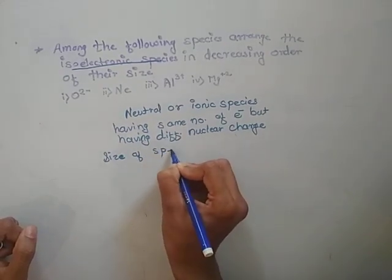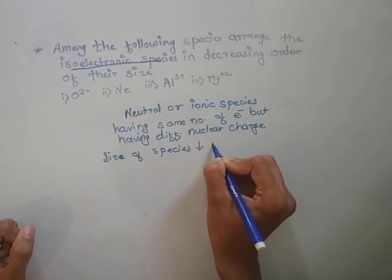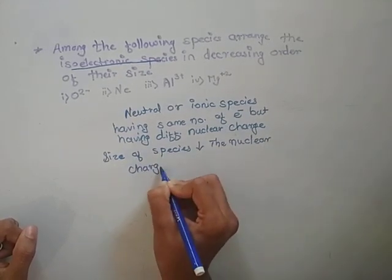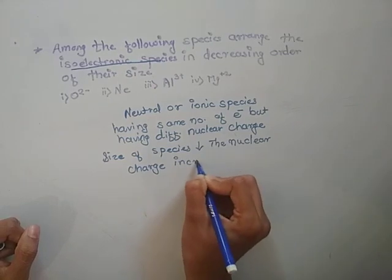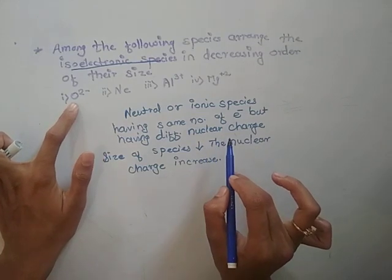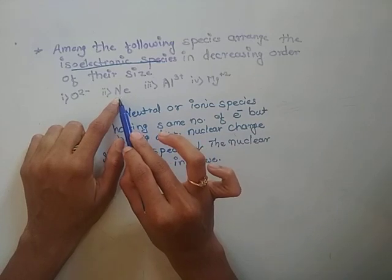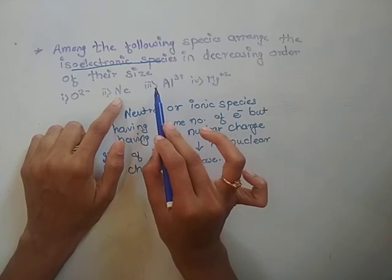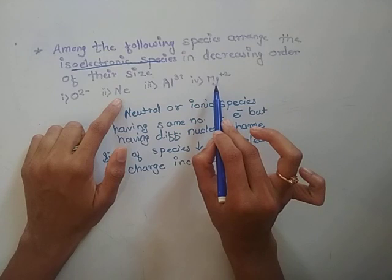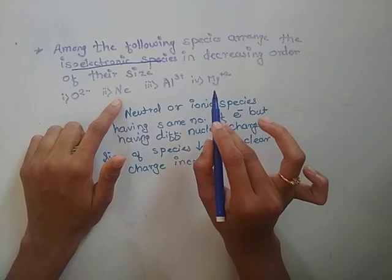For isoelectronic species, size decreases as nuclear charge increases. In this example, oxygen has atomic number 8, neon has atomic number 10, aluminum has atomic number 13, and magnesium has atomic number 12. Hence, the decreasing order of their size is: O2- is largest, then Ne, then Mg2+, then Al3+.